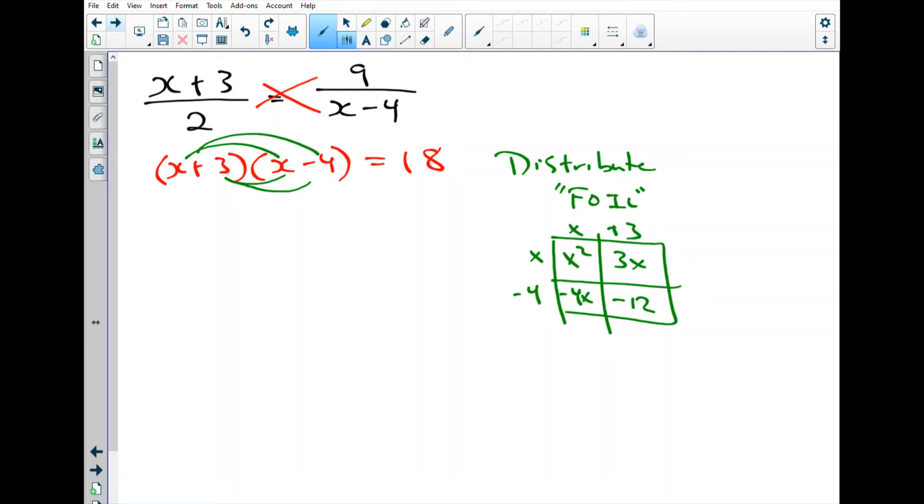So I personally like to use the distributive property here. So x times x, that first set, gives us x squared. And then distributing the x to the negative 4 will give us negative 4x. 3 times x is 3x. And finally, 3 distributed to the negative 4 will give us negative 12. And that, of course, equals 18 in this problem.